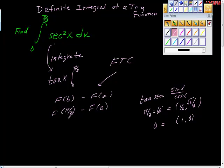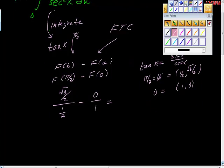So f of pi thirds is sine of pi thirds over cosine of pi thirds. And sine of pi thirds is square root of three over two over one half. Minus, and here we have sine over cosine. Sine of zero is zero, cosine of zero is one. That's really helpful. We're getting there already.